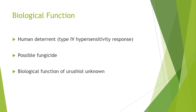So the biological function of urushiol. It's best known to act as a human deterrent, causing those horrible rashes, and this is because of a type 4 hypersensitivity response. However, similar compounds have been known to have fungicidal activity, but the exact biochemical function of urushiol is actually unknown.